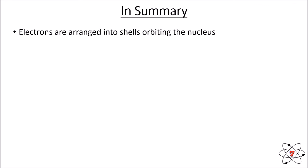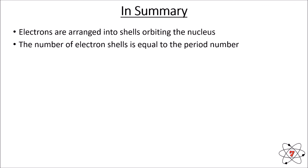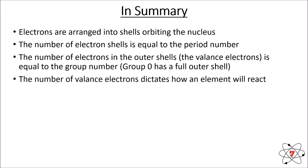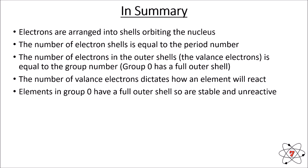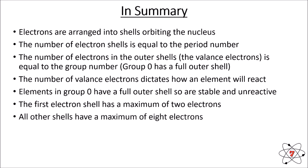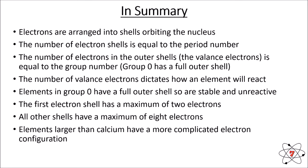In summary: electrons are arranged into shells that orbit the nucleus. The number of electron shells is equal to the period number. The number of electrons in the outer shell — the valence electrons — is equal to the group number. Group 0 always has a full outer shell, and the number of valence electrons dictates how an element will react. Elements in group 0 have a full outer shell, so are stable and unreactive. The first electron shell has a maximum of two electrons; all other shells have a maximum of eight. Elements larger than calcium have a more complicated electron configuration. Have a go at the worksheets — until next lesson, keep on learning!